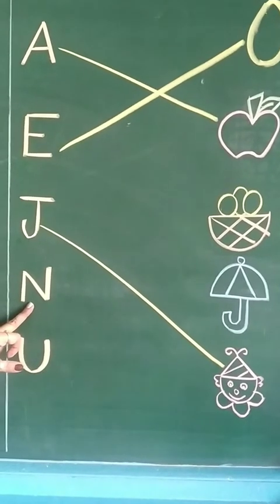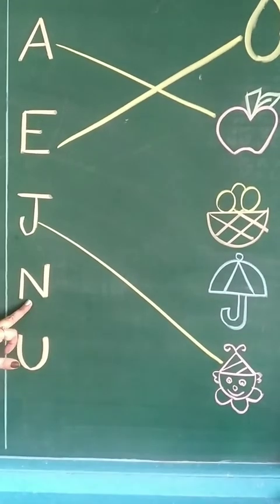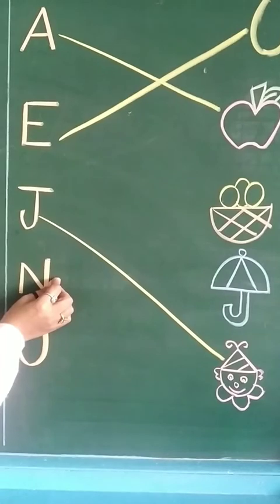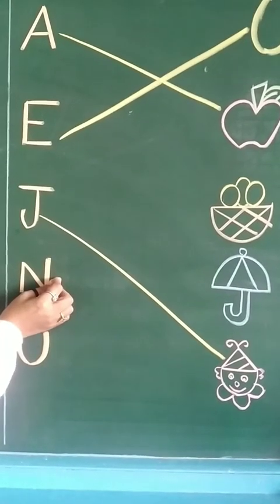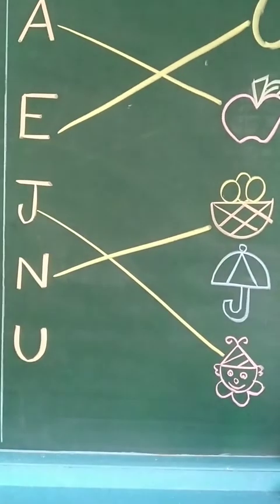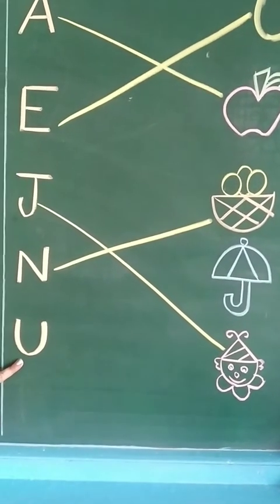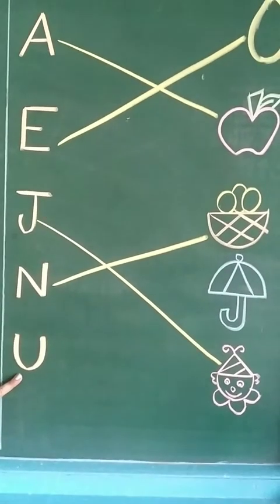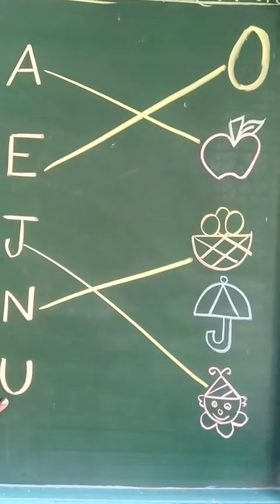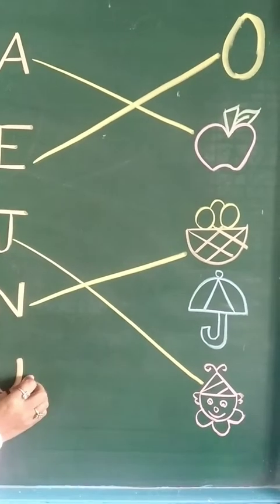Now this letter is letter N. N for — tell me, tell me. Yes, N for nest. Very good! And which letter is this? This is letter U. U for umbrella. Very good!